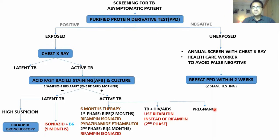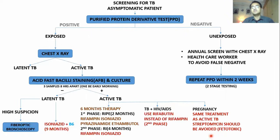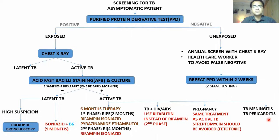A pregnant patient has the same treatment as active TB, with the difference that streptomycin cannot be given because it is fetotoxic. For a patient who has TB meningitis or TB pericarditis, the treatment is the same as active TB but extended to 12 months, and steroids are added to the treatment.